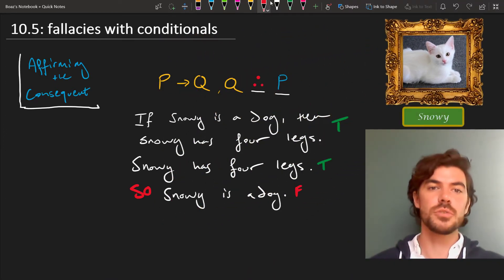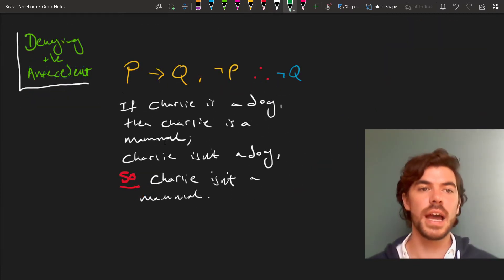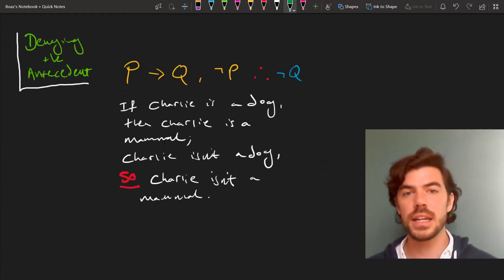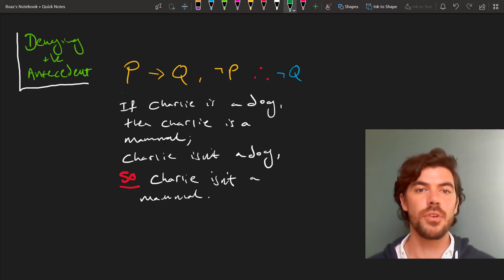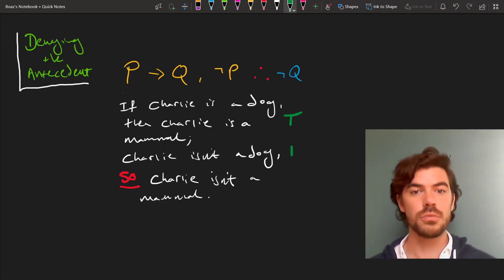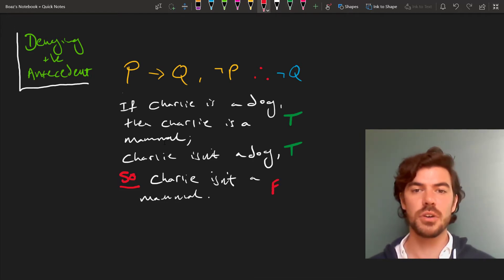Now let's turn to denying the antecedent. So denying the antecedent works in a slightly different way, where from the falsity of the antecedent we assume that the consequent is false. If Charlie is a dog, then Charlie is a mammal. Let's say that's true. Charlie isn't a dog. Let's say Charlie is a cat. So Charlie isn't a mammal. Well no, cats are mammals. So this again is a fallacy because it allows us to go from T to F.